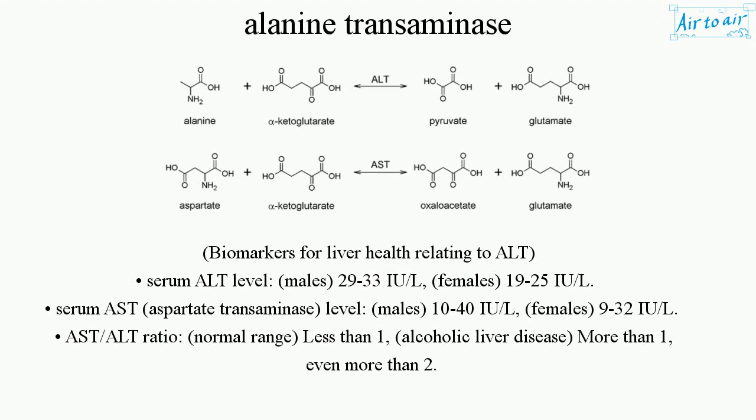Biomarkers for liver health relating to ALT: serum ALT level — males 29 to 33 IU/L, females 19 to 25 IU/L. Serum aspartate transaminase (AST) level — males 10 to 40 IU/L, females 9 to 32 IU/L. AST/ALT ratio normal range: less than one; alcoholic liver disease: more than one, even more than two.